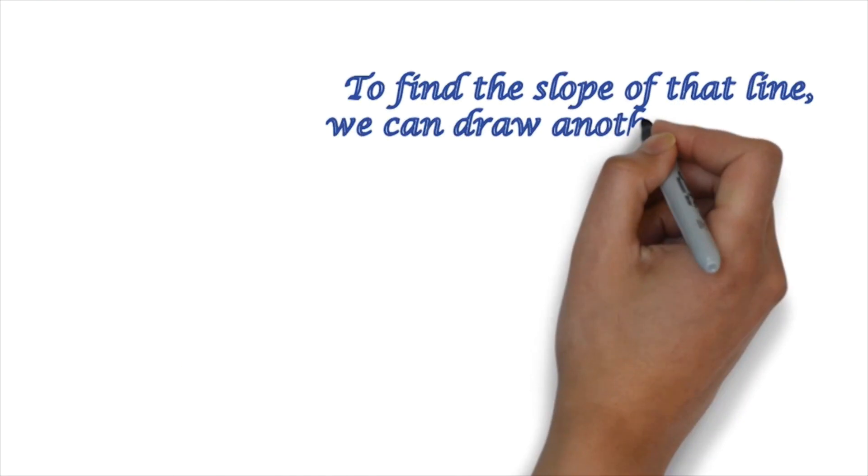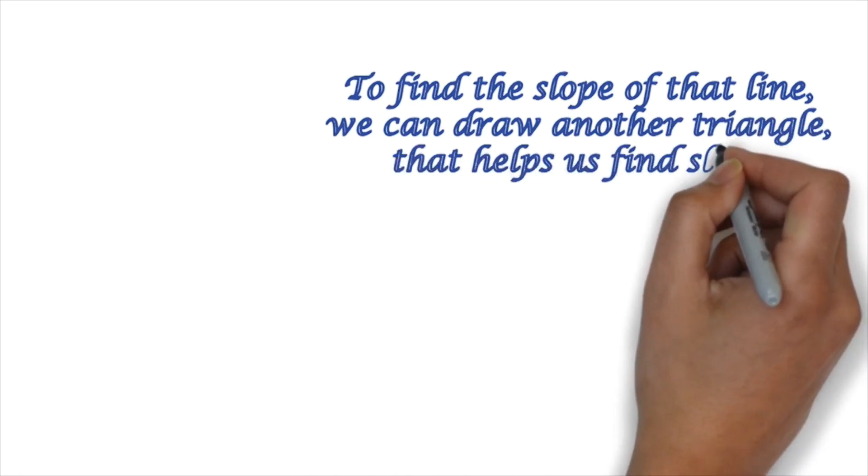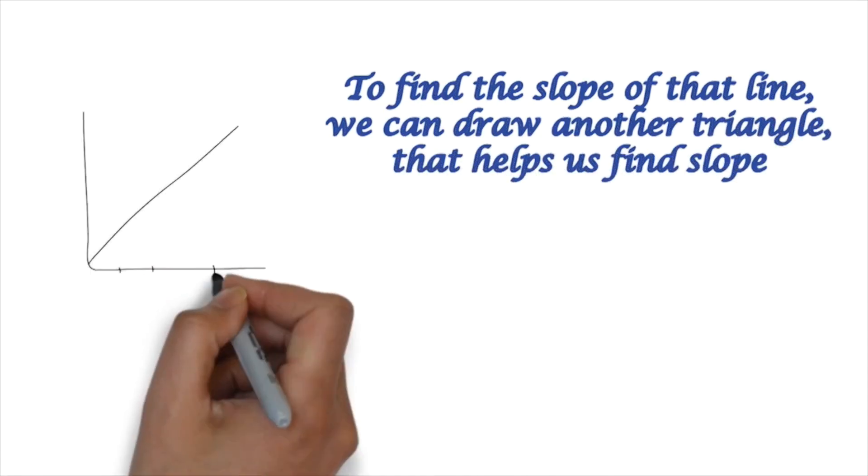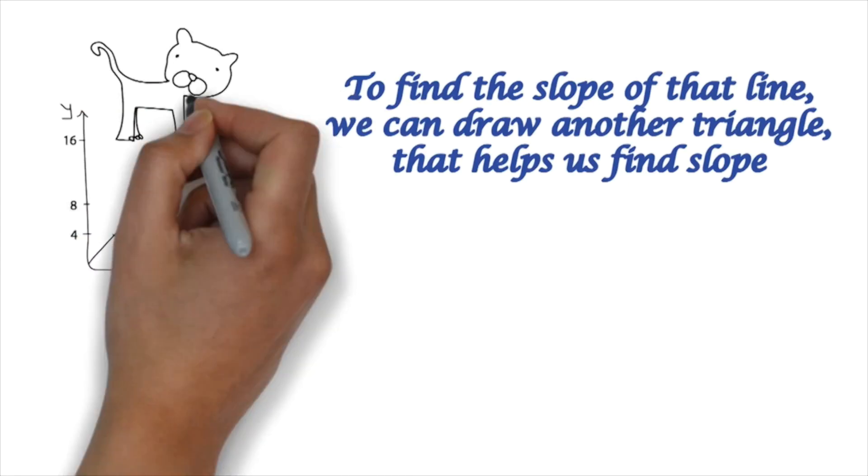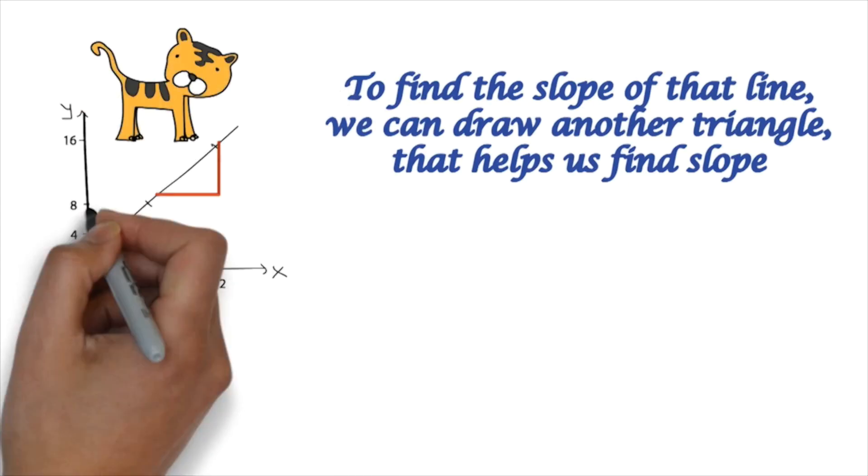So to find the slope of that line, we can draw another triangle, and that helps us find slope. So there's a cheetah, and some people call this a slope triangle.